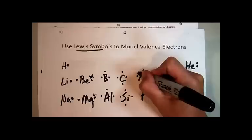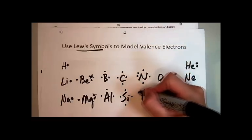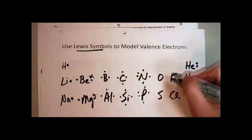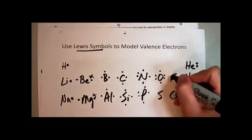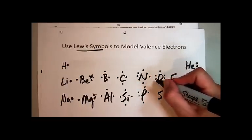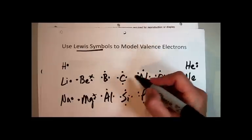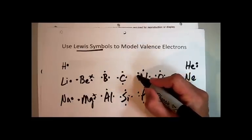Nitrogen has five, so I have to start doubling up. Same with phosphorus. Oxygen—and again, it doesn't matter where you put the dots as long as you have them. Once you get past four, you have to start doubling up, but it doesn't matter if the doubles are right here or on top or whatever.